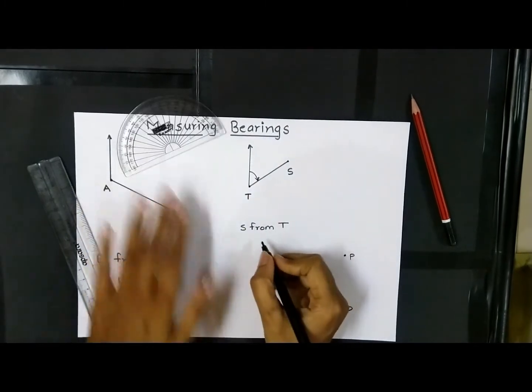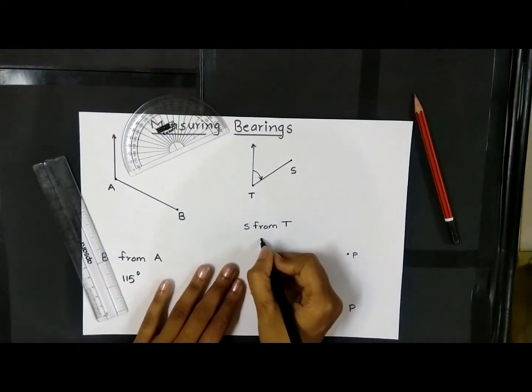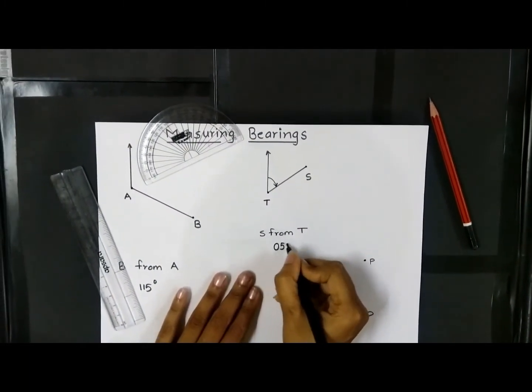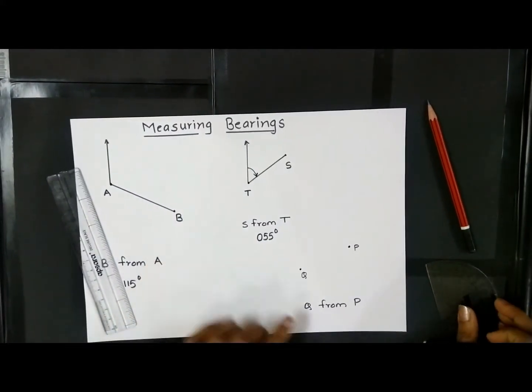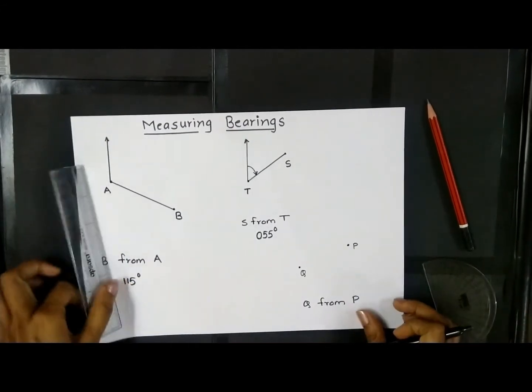So bearing of S from T is 055 degrees. The next bearing is Q from P.